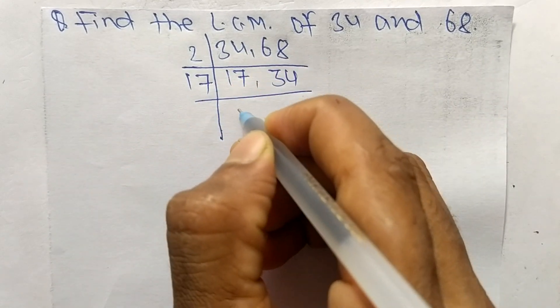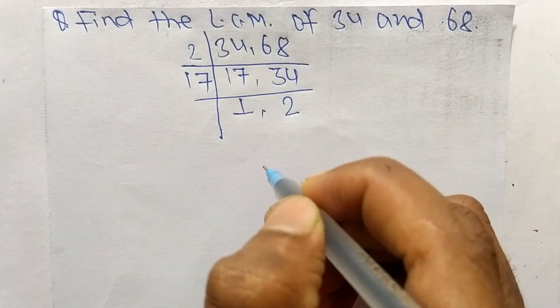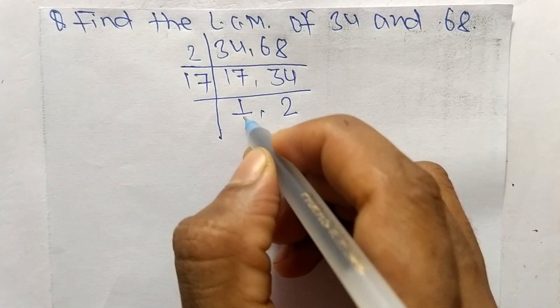17 times 1 means 17, 17 times 2 means 34. So at last we have 1 and 2.